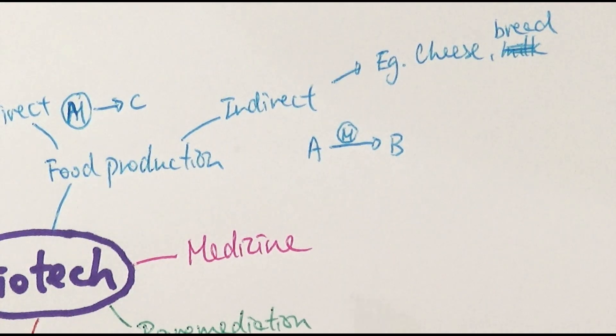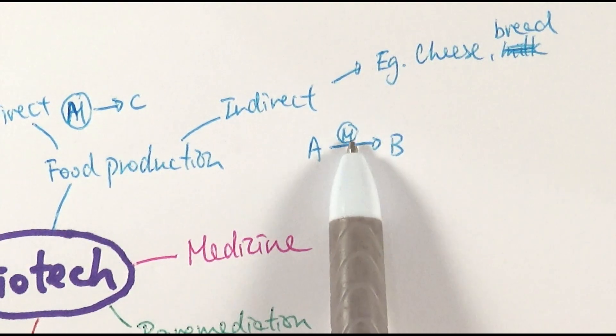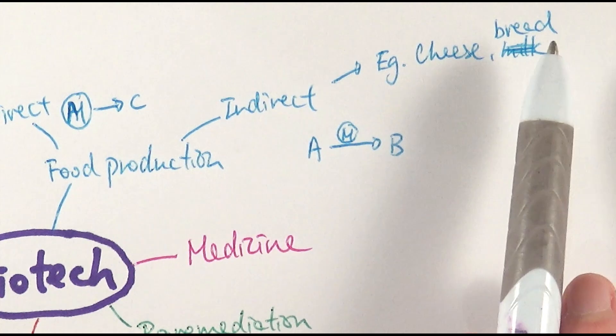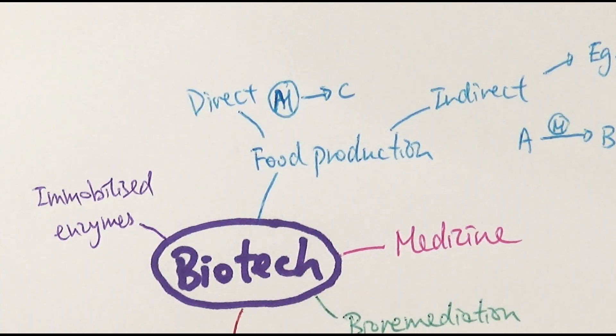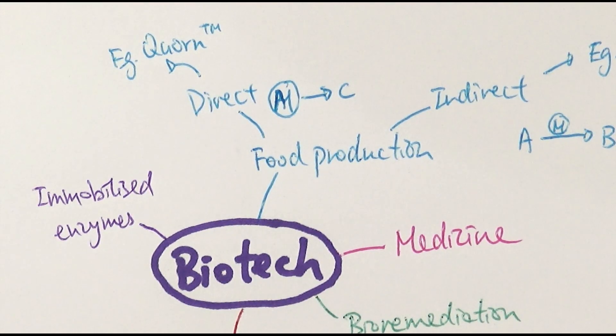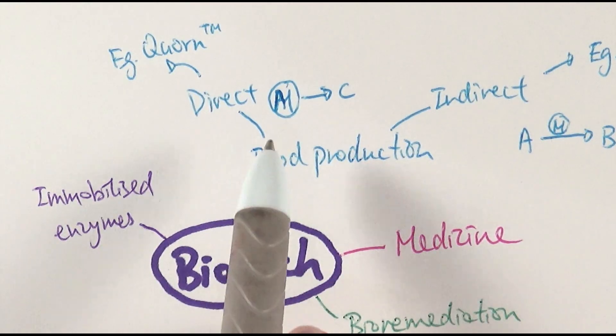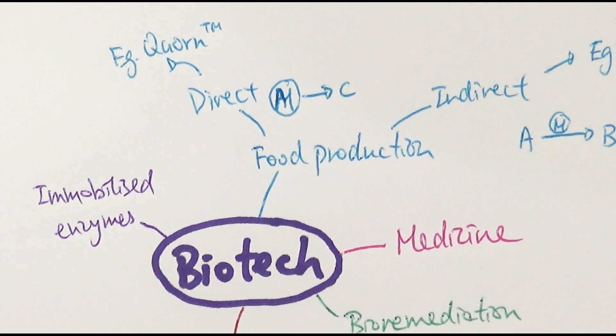Examples for indirect food production will be cheese and bread. For example, you're changing the dairy products, fermenting it and turning it into cheese. Or just flour or dough, you put in a bit of yeast and turn it into bread. The one example of direct food production will be Quorn. In this case, they're using fungi as the microorganism, genetically engineer it, and they're making that fungi produce proteins to solve the world protein shortage problem.